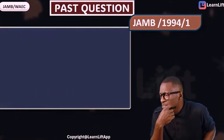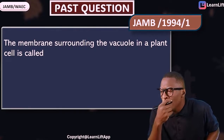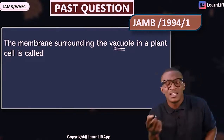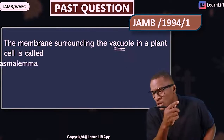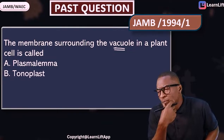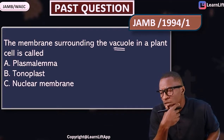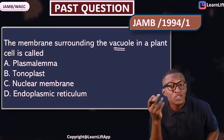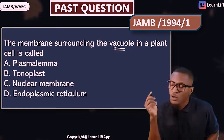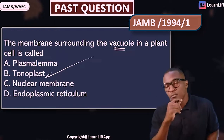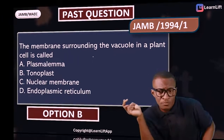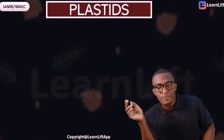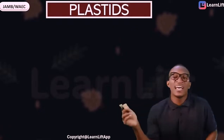Let's tackle a JAMB past question — 1994, question one: 'The membrane surrounding the vacuole is called...' The answer is the tonoplast. The options may include nuclear membrane and others, but we know the membrane surrounding the vacuole is called the tonoplast.